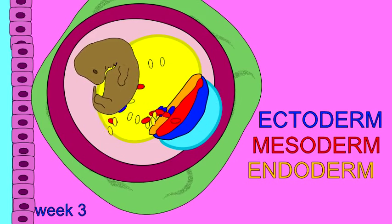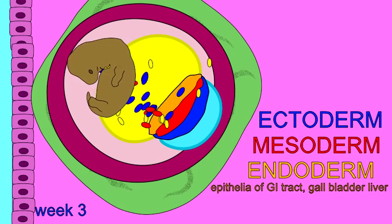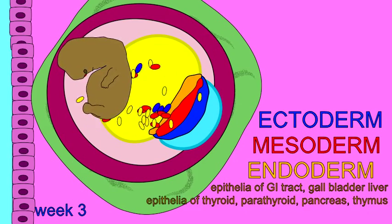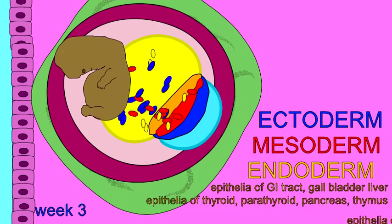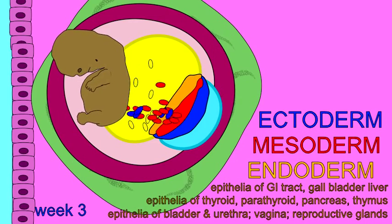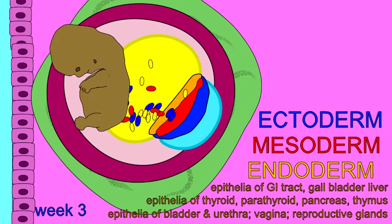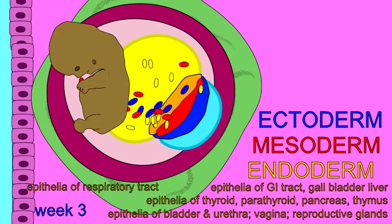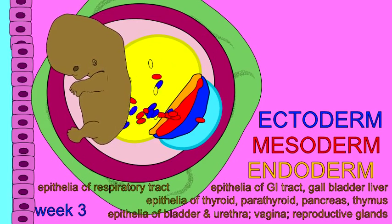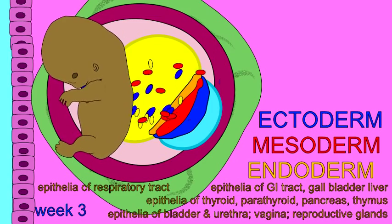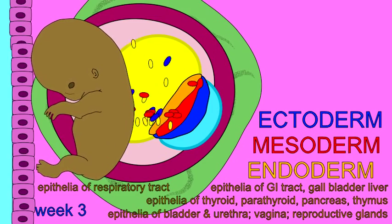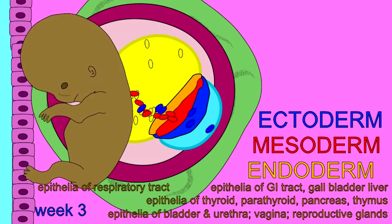From endoderm comes the epithelial lining of the GI tract, glands, the lining of the urinary bladder, gallbladder, and liver, the epithelial lining of the respiratory system from the pharynx through the lungs, the epithelium of some of the glands such as the thyroid, and of parts of the reproductive system.